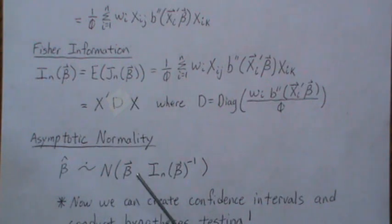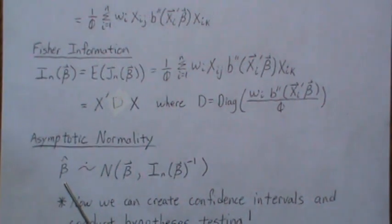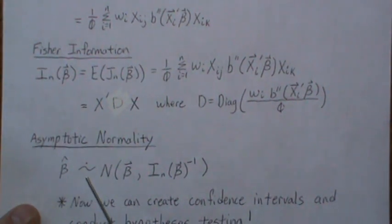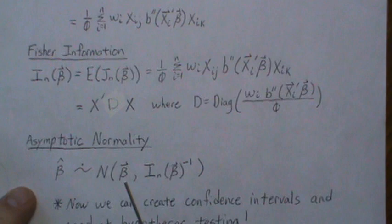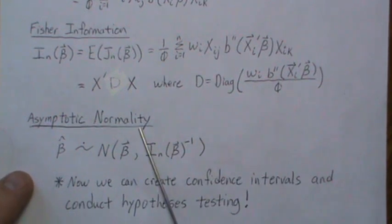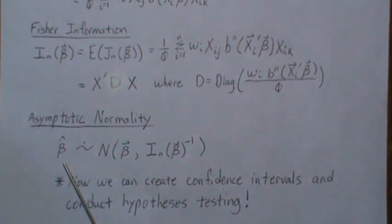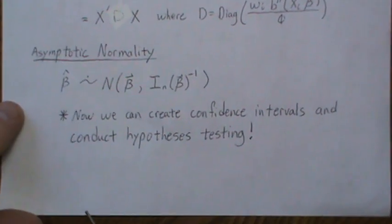Now we solve for the maximum likelihood estimates. We put the optimization in a black box and obtain the MLE, which we'll touch upon in later videos. Once we have the maximum likelihood estimators, we assume they are asymptotically normal. As shown in video BV3, the MLE is normal with mean equal to the beta vector and variance equal to the inverse of the Fisher information matrix. With this result, we can create confidence intervals for our estimates, do hypothesis testing, and many other things.